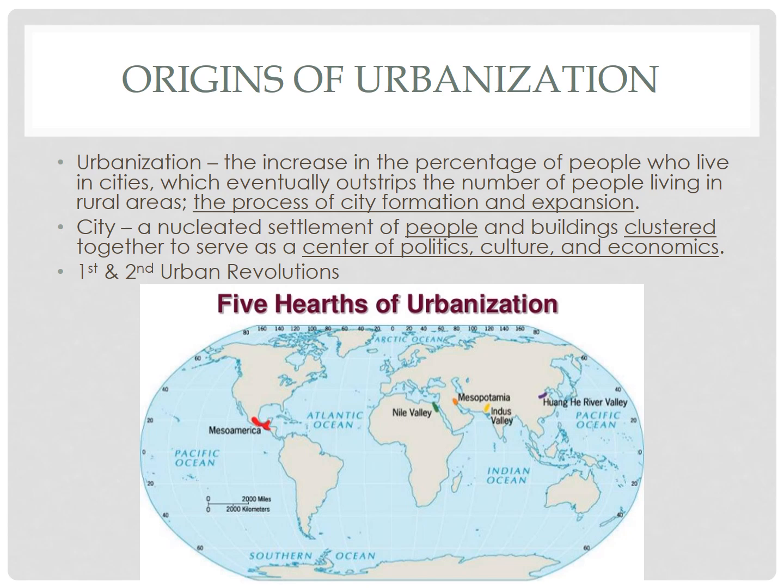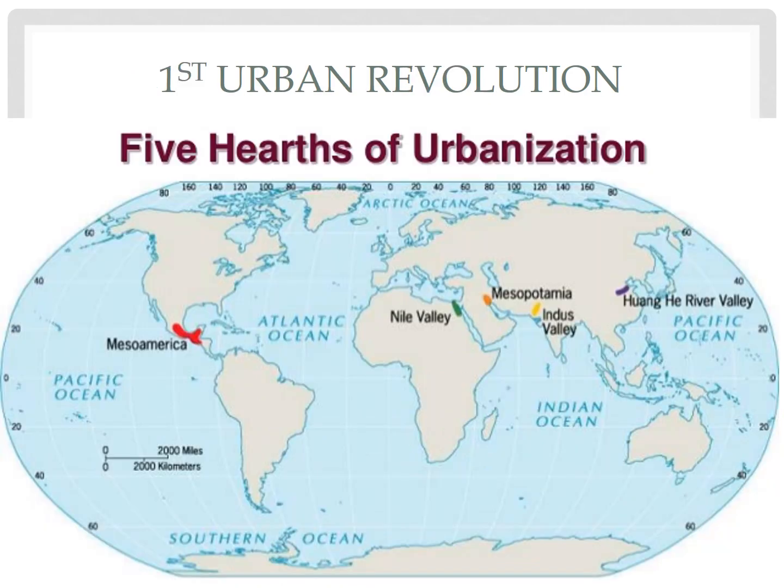So how did these first cities form? The formation of cities is known as the first urban revolution. As people transitioned from hunter-gatherers to sedentary farmers, a variety of things changed. They didn't need to travel around as much and could remain in one place, especially in river valleys where the soil was fertile. This allowed them to grow food and control its supply so that they could produce a food surplus. That surplus allowed some members of the community to do things other than agriculture, like carpenters who could build permanent houses and buildings to store that food.